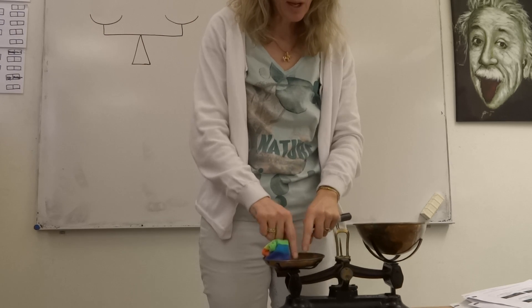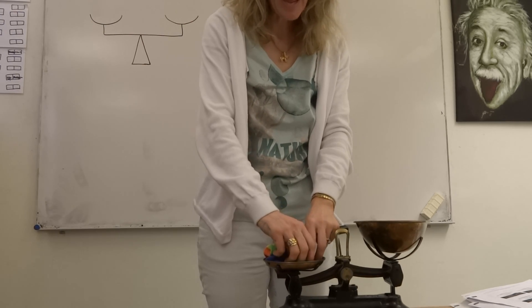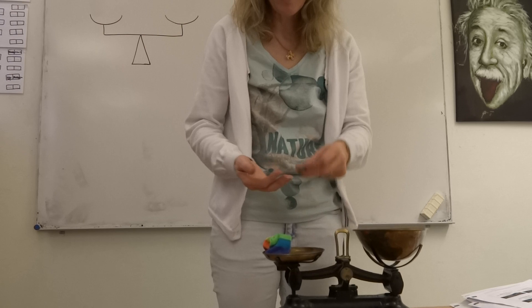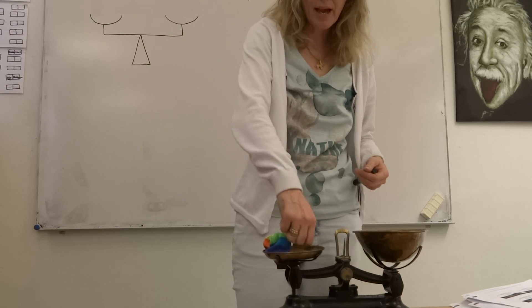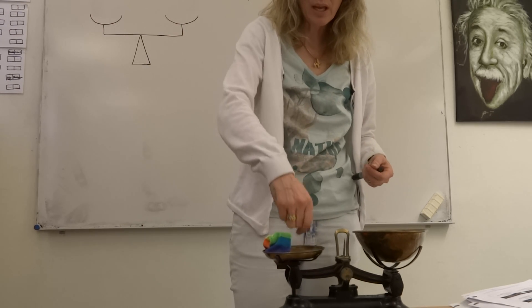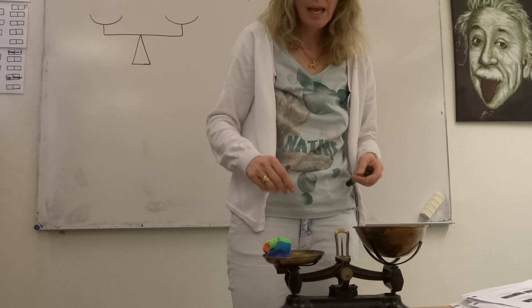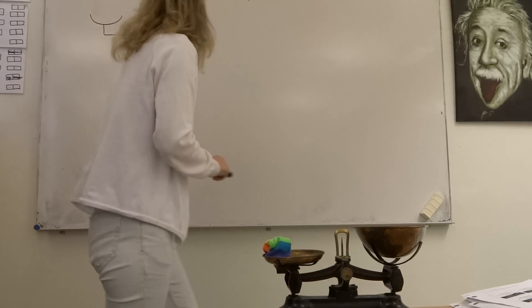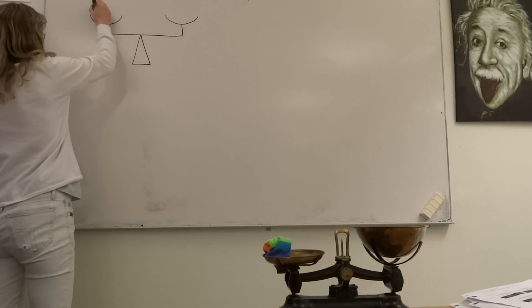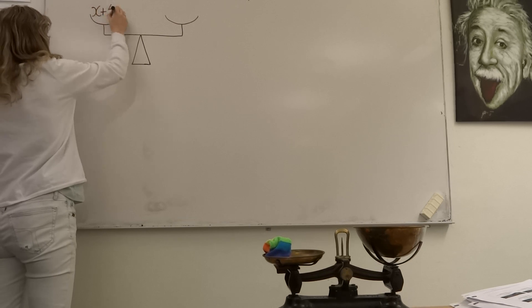What else have I got on my scale? Well, on this side, I have x, which I don't know how many coins there are in there. And on this side, I have 1, 2, 3, 4, 5. And it's balanced when I have 5 coins in. So, on this side of my scale, I have x plus 5.